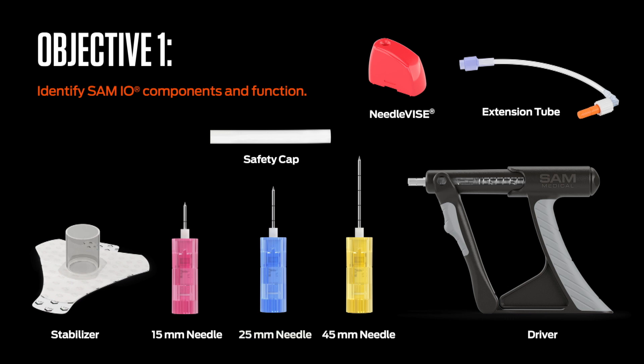Once the needle assembly is properly positioned, the stylet is removed to expose a standard lure lock for extension set connection. With the extension set connected, aspiration verification, flushing, and selected treatments may commence. Note that the various components supplied by the IO access system are depicted in this illustration. No PPE or cleansing agent is supplied with the SAM-IO.